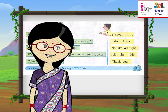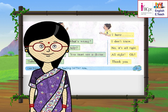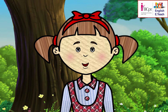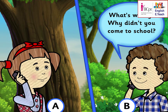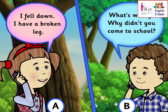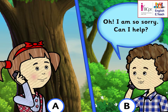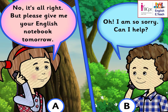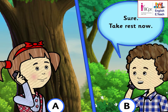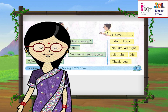Now it is the turn of Jenny and Nikhil. Nikhil is A and I am B. We are talking on the phone. A: What's wrong? Why didn't you come to school? B: I fell down. I have a broken leg. A: Oh, I am so sorry. Can I help? B: No, it's alright. But please give me your English notebook tomorrow. A: Sure. Take rest now. Excellent.